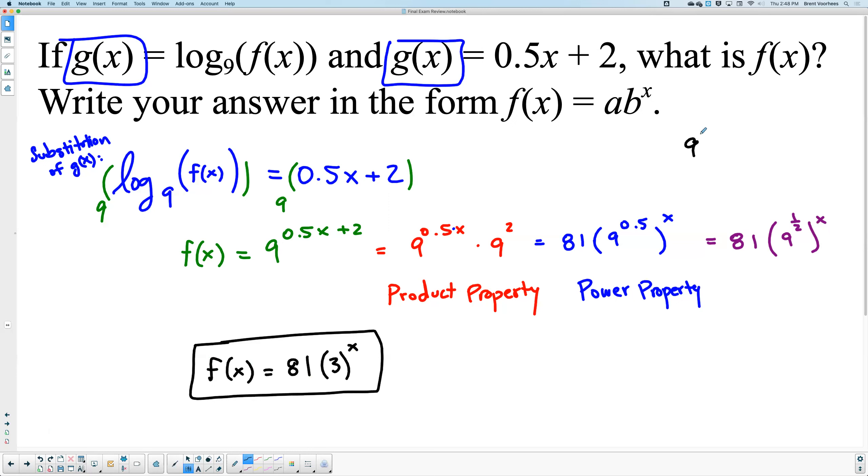Off to the side, I'll put 9 to the 0.5 is equal to 9 to the one-half, which is equal to the square root of 9. Maybe that's how I should do it for the notes. Right here I'll put the square root of 9.